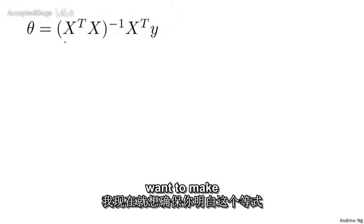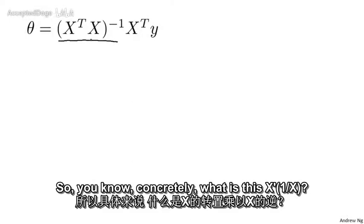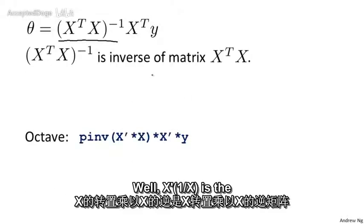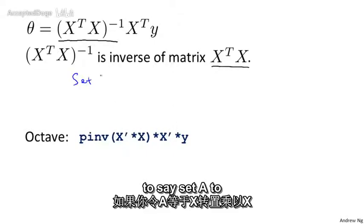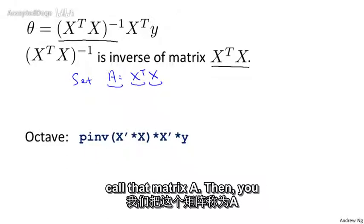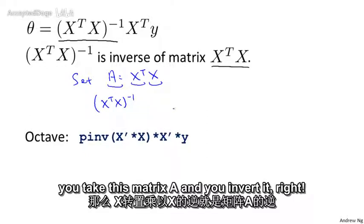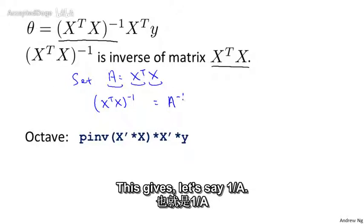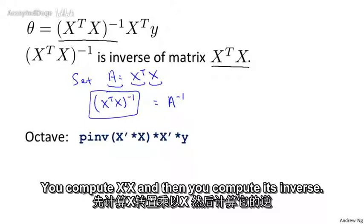To make sure this equation is clear: X transpose X inverse is the inverse of the matrix X transpose X. If you set A equal to X transpose times X, then X transpose X inverse is just A inverse. So you compute X transpose X and then compute its inverse. This gives you the full expression: X transpose X inverse times X transpose y.